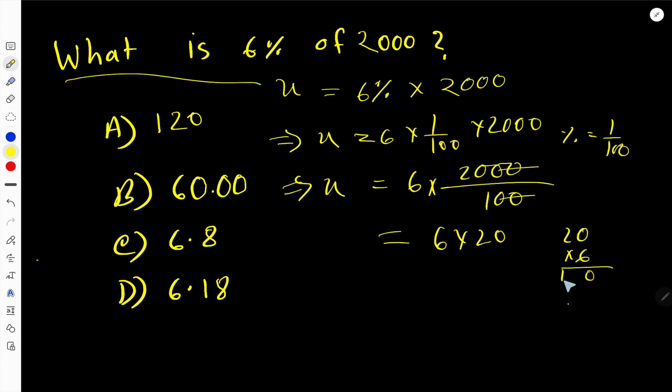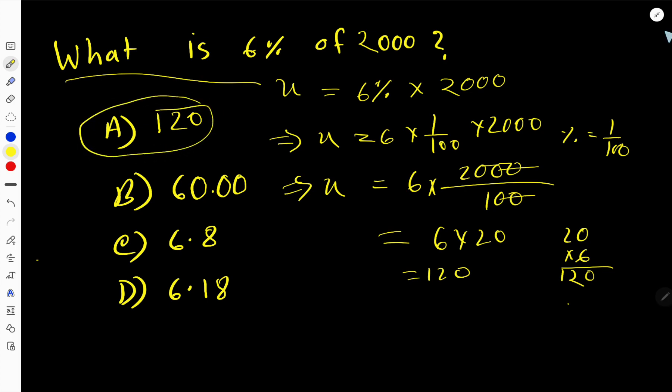Now we multiply: 6 times 0 is 0, and 6 times 2 is 12, giving us 120. So option A is the answer.